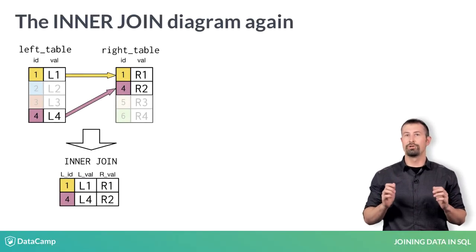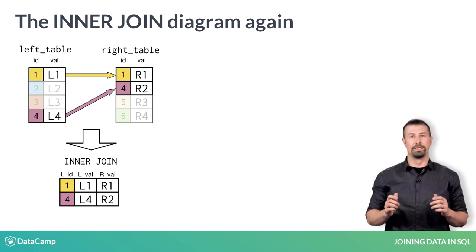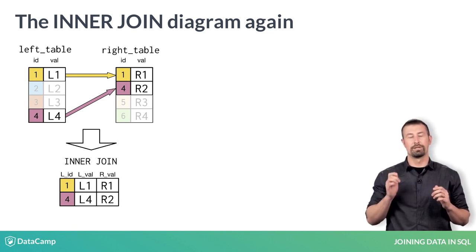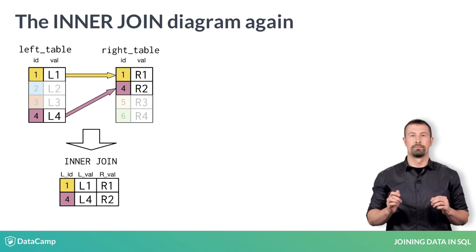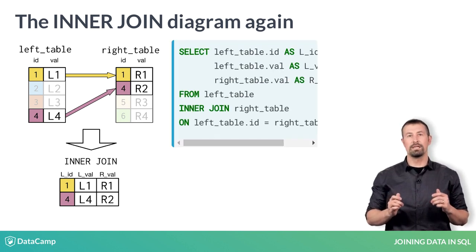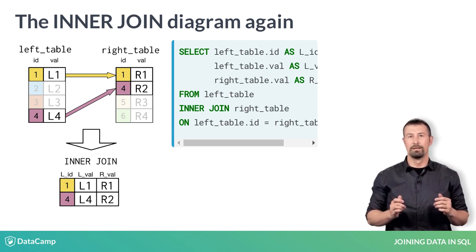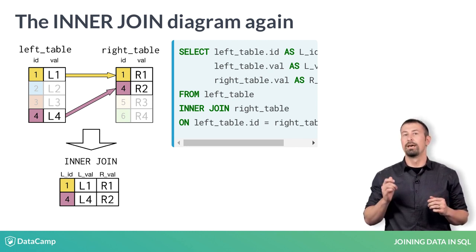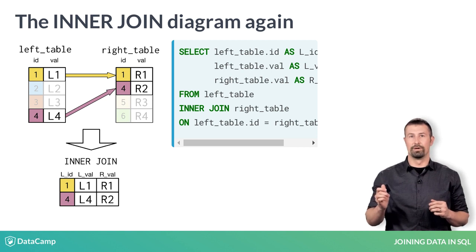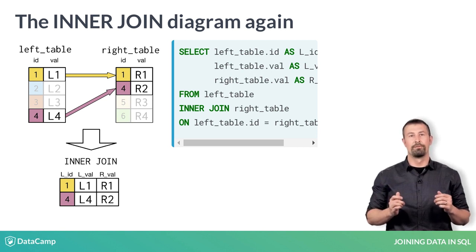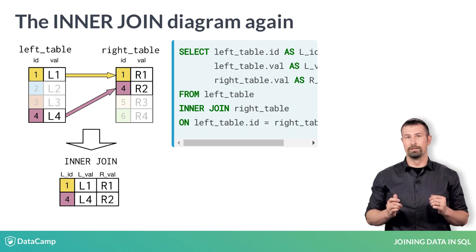Recall the inner join diagram you saw in the last video. Think about the SQL code needed to complete this diagram. We select and alias three fields and use the left table on the left of the join and the right table on the right of the join, matching based on the entries for the ID key field.